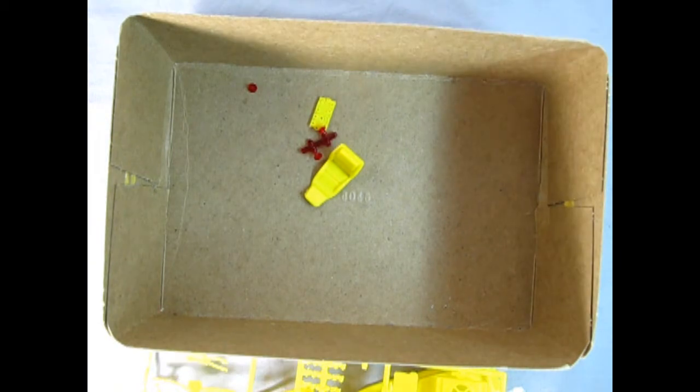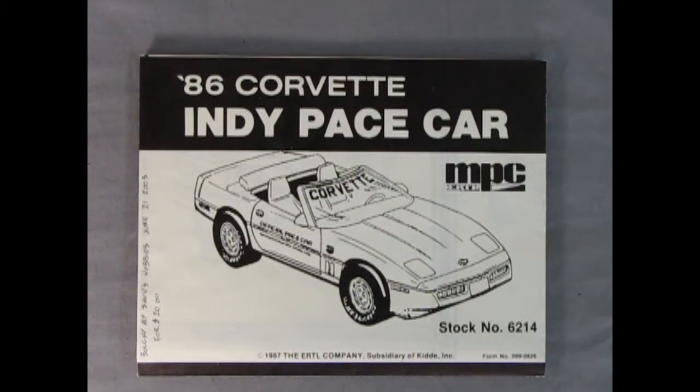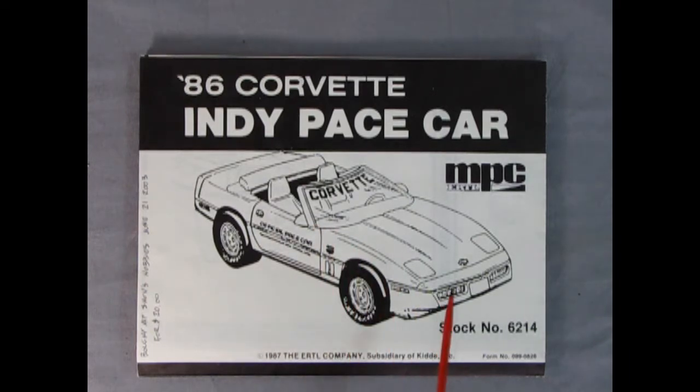We'll clear this out of the way and Danny the dog will read the instructions for you. Hey everybody, this is Danny the dog again. Here we've got our instruction sheets for the '86 Corvette Indy pace car. It's interesting that the box says '86 but on the instructions it says '87, so I don't quite know what's going on there.